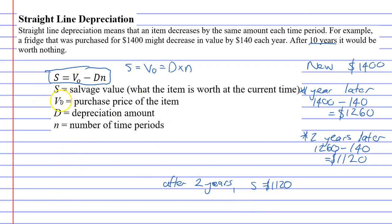Alright. V₀ represents the purchase price of the item. So the V₀ for the fridge is $1,400. That's what we bought it when it was new. There is a reason we write V with an O. It basically means the value of the item after zero years. So it's V₀. And after zero years, it's worth $1,400 because no time has passed.